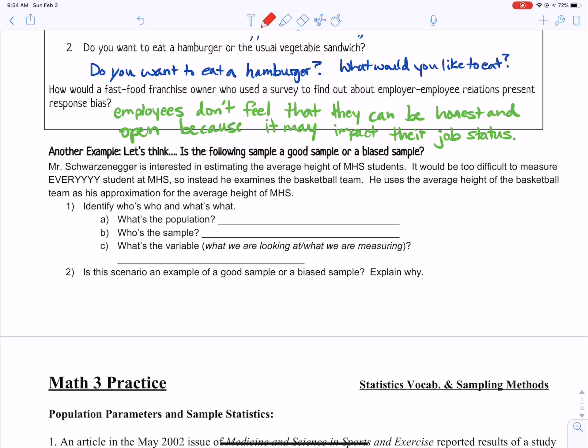So it says, identify who's who and what's what. What's the population? So let's put all students at Mooresville High School. What's his population he was aiming for? The sample he chose was the basketball team. And it says, what's the variable? What are we looking at? And what are we measuring? We're measuring to find the average height.